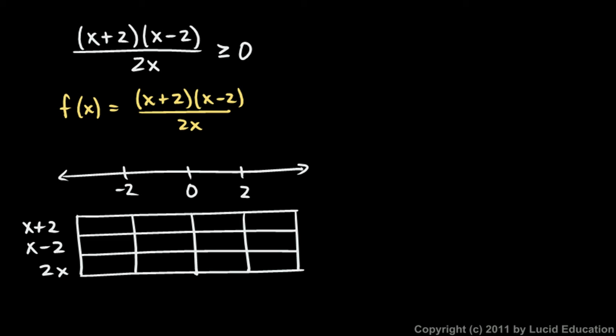First, x plus 2. If you have x values to the left of negative 2, x plus 2 will be negative. But if x is anywhere to the right of negative 2 — any of those regions — x plus 2 is going to be positive. So it's positive for all of those regions.